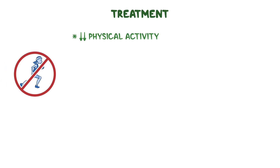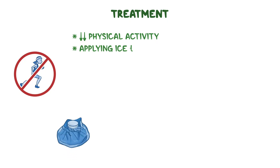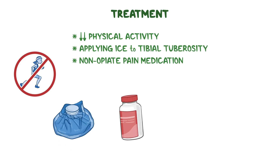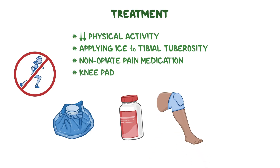The treatment of Osgood-Schlatter disease mainly consists of temporarily reducing physical activity and applying ice to the tibial tuberosity to reduce swelling, as well as non-opiate pain medication. Wearing a knee pad to protect the tubercle can be helpful, as can physical therapy.